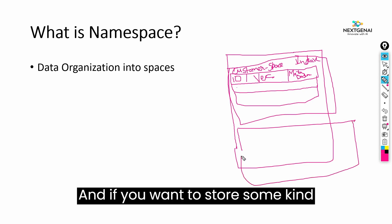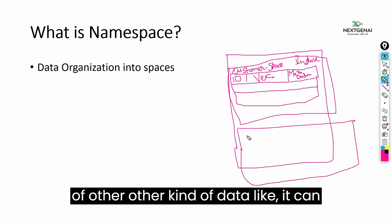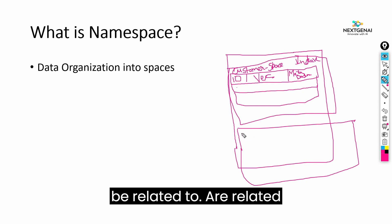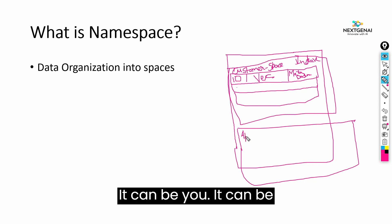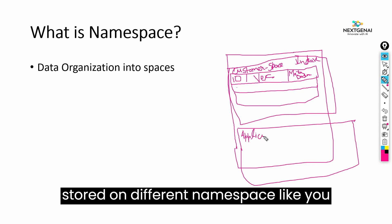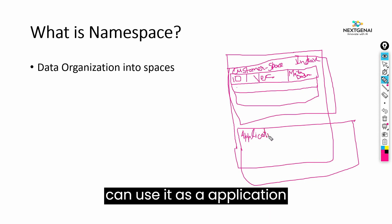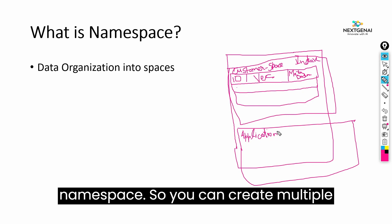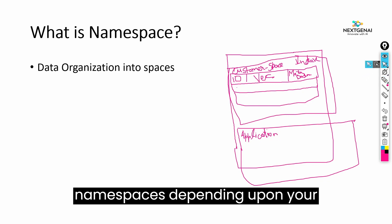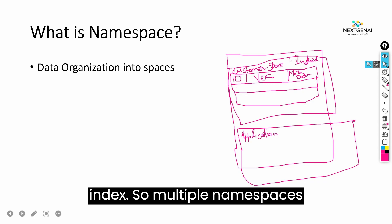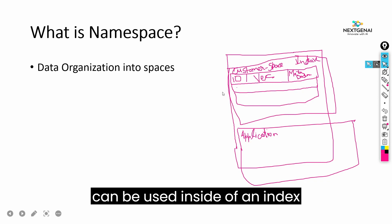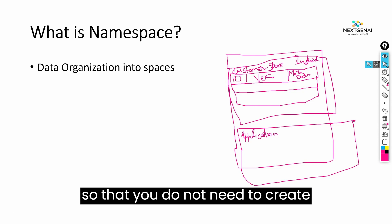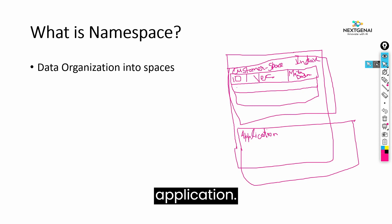If you want to store some other kind of data — like your application data — it can be stored in a different namespace, such as an 'application namespace'. You can create multiple namespaces depending upon your application and store them all inside one index. This way you do not need to create multiple indexes for one application.